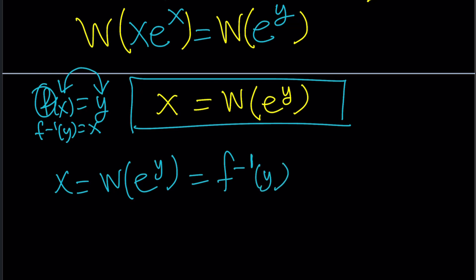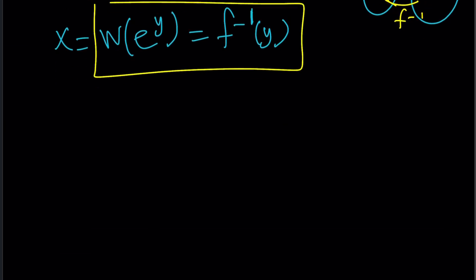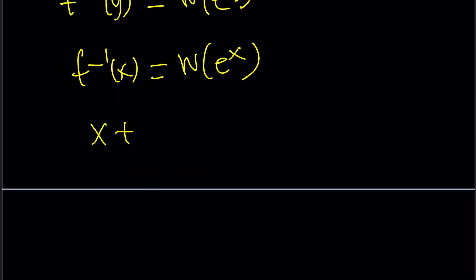In other words, if f takes x to y, like this, if this is f, this is going to be f inverse. The inverse map, right? So, what does this tell you? This one. Let's go ahead and rewrite it. f inverse of y equals W(e^y), which means f inverse of x is W(e^x). So, in other words, the inverse function for x + ln x is W(e^x). Make sense?